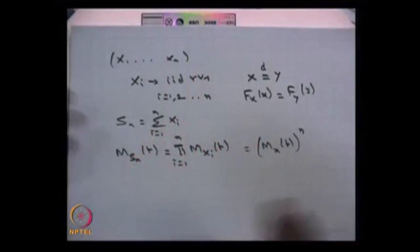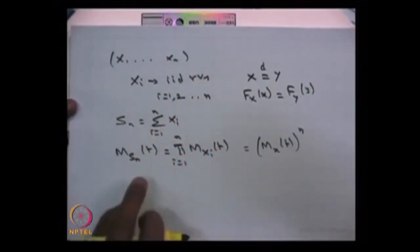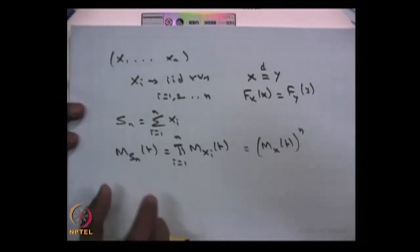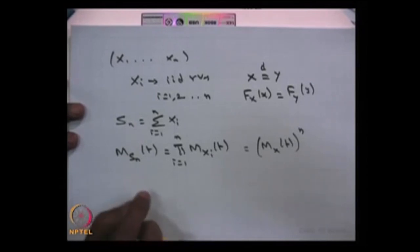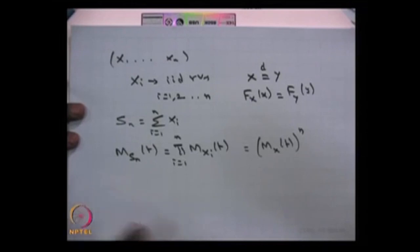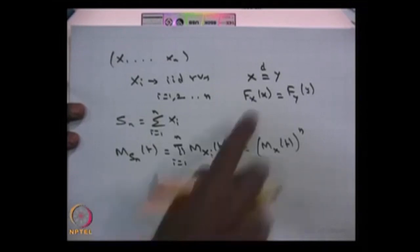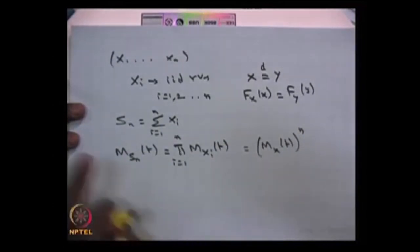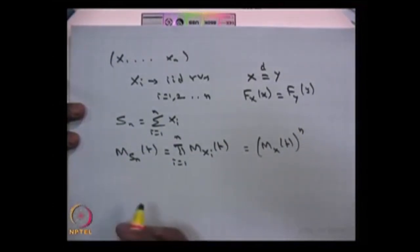There is one more property of the MGF. Suppose you find the MGF of some unknown random variable and it matches with the MGF of any standard random variable, then you can conclude the unknown random variable is also distributed in the same way. That means, just as equal CDFs imply identical random variables, if the MGFs of two different random variables are the same, then you can conclude the random variables are also identically distributed.